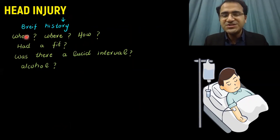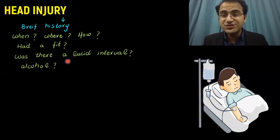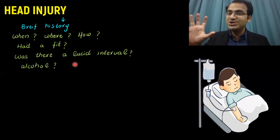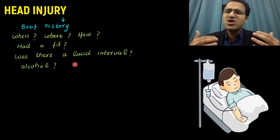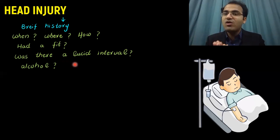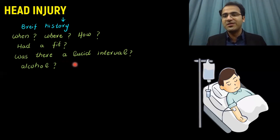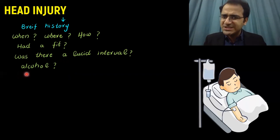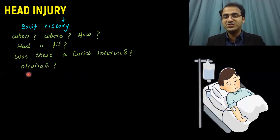Take a brief history: when, where, and how the patient was found. Did the patient have any fit or seizure? Was there a lucid interval? Sometimes patients get a head injury, are initially conscious, talk to relatives, say they are fine — then suddenly collapse and die. This is called 'walk, talk and die' syndrome, seen in epidural hematoma. Was the patient intoxicated with alcohol? All this information helps in management.